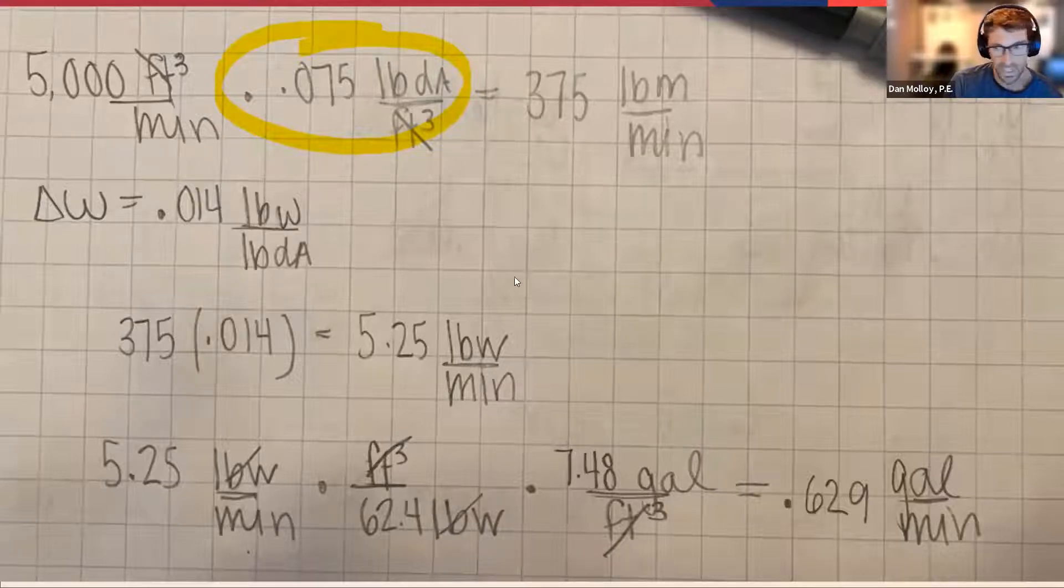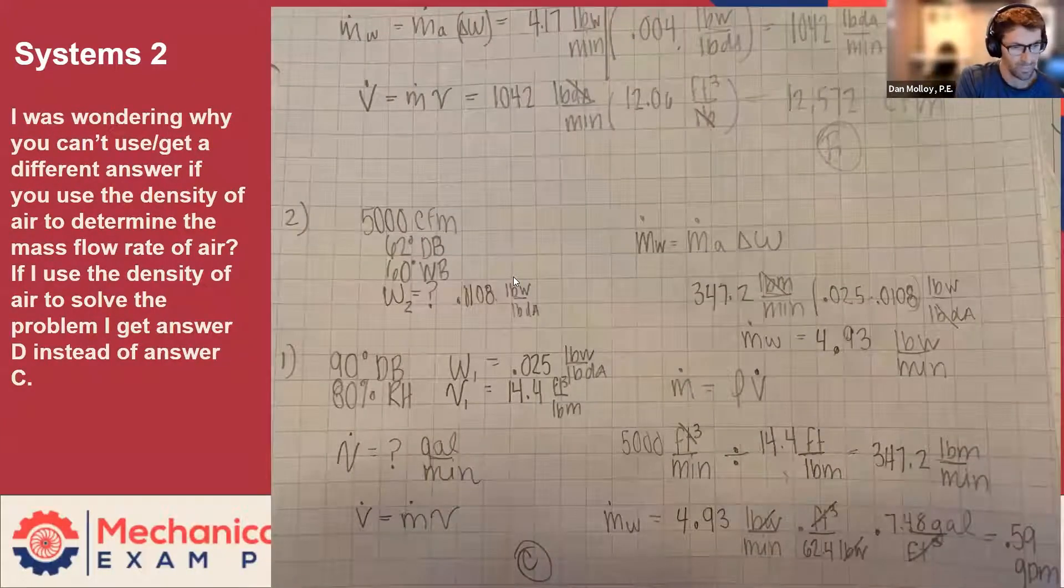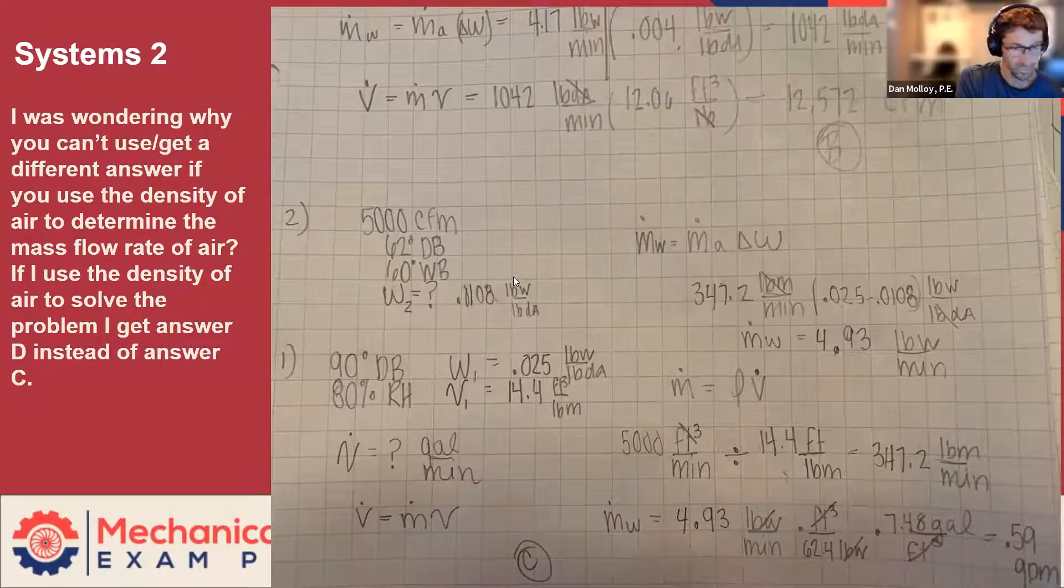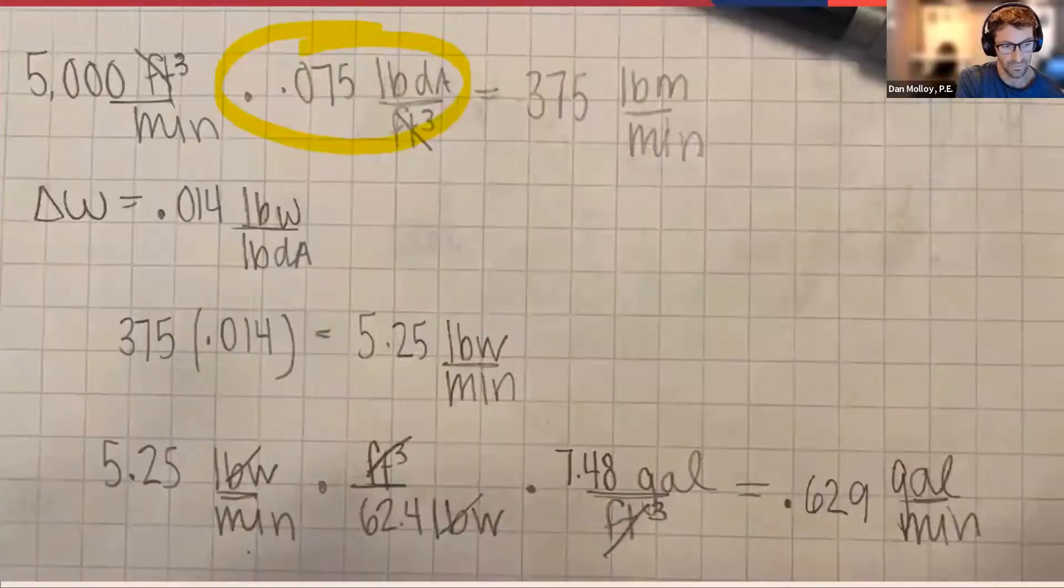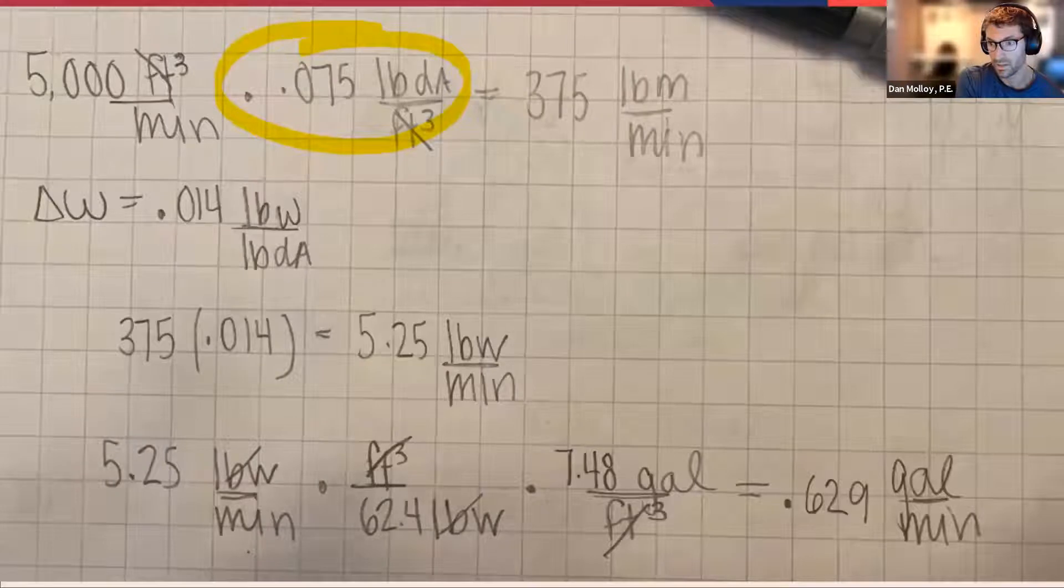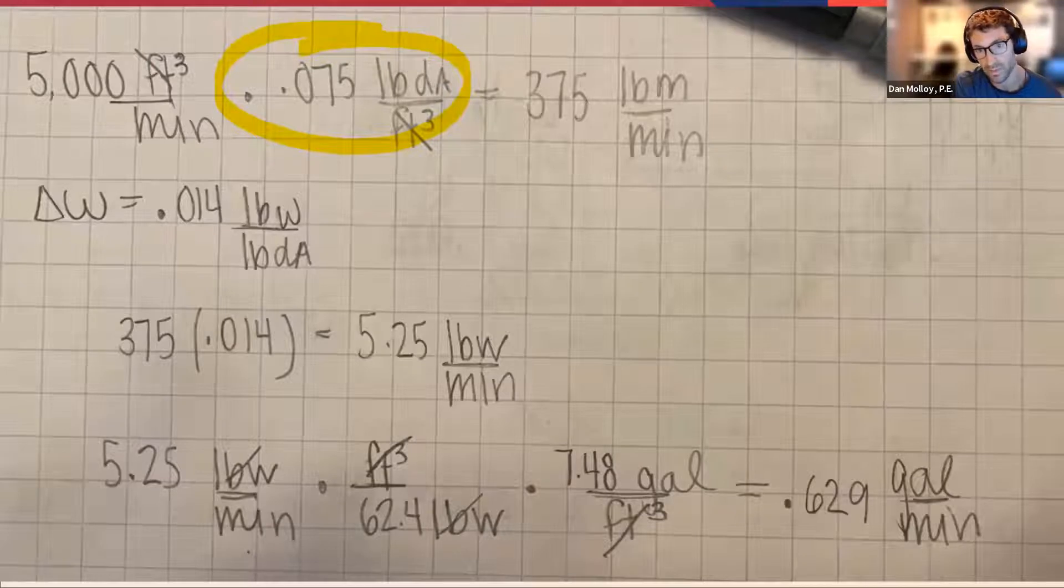So the density that corresponds to this 14.4 is about 0.069. Compare that to 0.075 used here. Again, we're only talking about a few percent error, but in this case, the answer choices were put very close together, and that was a difference maker.